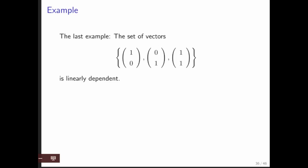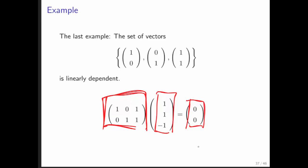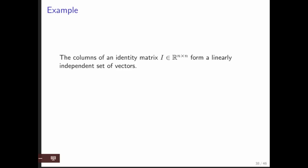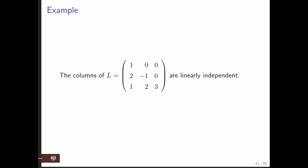In the last example, we view the vectors as a matrix and find a non-zero vector that maps to zero when multiplied by that matrix — therefore the columns are linearly dependent. As for examples: the columns of the identity matrix form a linearly independent set, because it's easy to see that the null space of the identity is just the zero vector.